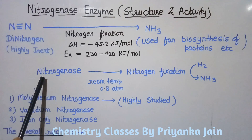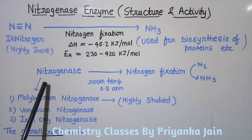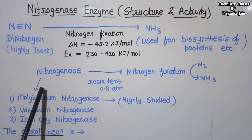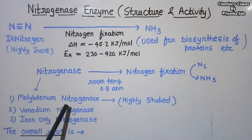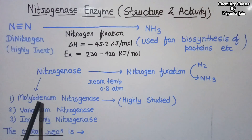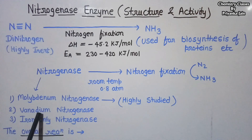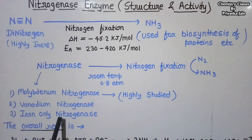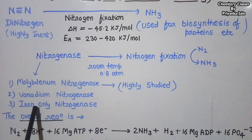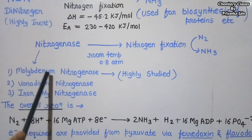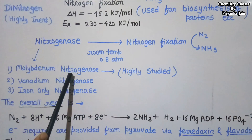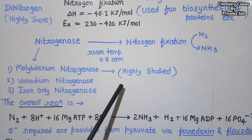There are three types of nitrogenase enzymes based on their active site. One is molybdenum nitrogenase, where molybdenum is present in the active site besides iron. Another is vanadium nitrogenase, and the third is iron-only nitrogenase, where the enzyme only possesses iron. In the vanadium nitrogenase, vanadium is also present with the iron. Of these, the molybdenum nitrogenase has been most highly studied, so we will focus on this one.